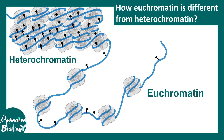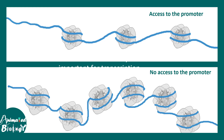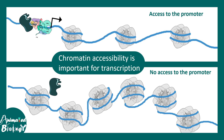In terms of DNA methylation, the heterochromatin region shows hypermethylation — many methyl marks — compared to euchromatin, which is generally hypomethylated. These factors are critical for gene expression: transcription factors need access to promoter regions to initiate transcription, and this accessibility requires low nucleosome density. That is why euchromatin is generally transcriptionally active, whereas heterochromatin is transcriptionally silent.